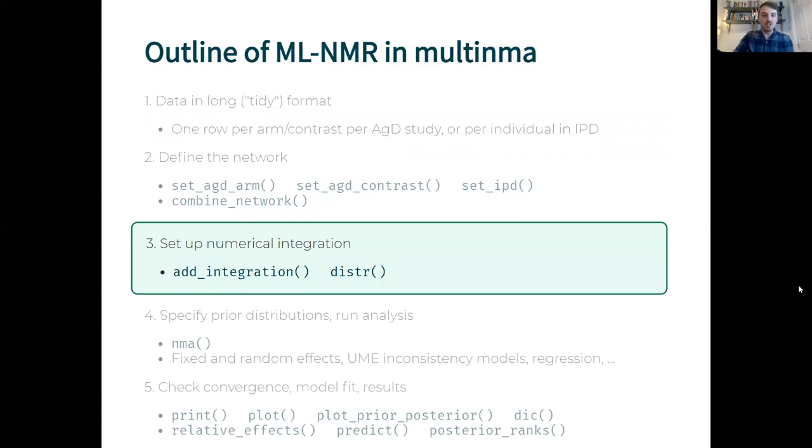The only difference when we're doing a multi-level network meta-regression is that we need to add in the numerical integration points into the network add integration function. The other steps remain exactly the same.